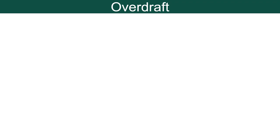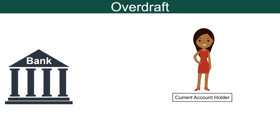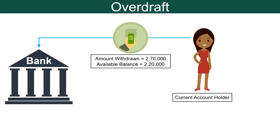Overdraft is a short term credit facility which banks provide to their current account holders — these are mostly businesses or business persons. In this facility, the current account holders can withdraw more amount than the amount actually standing in the credit of their current account. If the customer has good standing — for example, the holder usually maintains an average balance of Rs. 2 lakh — and the bank knows the customer well, such that the chances of default are quite rare, then the bank will allow the customer to withdraw more than the amount actually available. Suppose the customer requires Rs. 2.7 lakh and the available balance is Rs. 2.2 lakh, then also he can withdraw the same from the account.